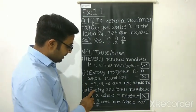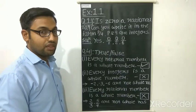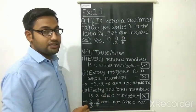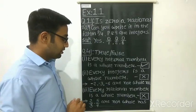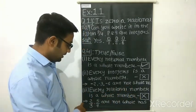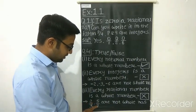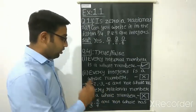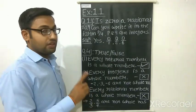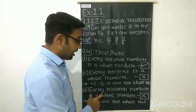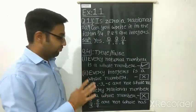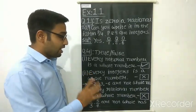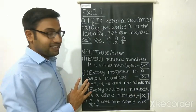Third statement: every rational number is a whole number. Rational numbers are in the form P by Q, while whole numbers contain only 0, 1, 2, 3, and so on. So this statement is false. The reason is that 2/3 and 5/7 are rational numbers but not whole numbers. If the statement said 'some of the rational numbers are whole numbers,' then it would be true. You have to carefully read what is being asked before giving the answer to this type of statement.